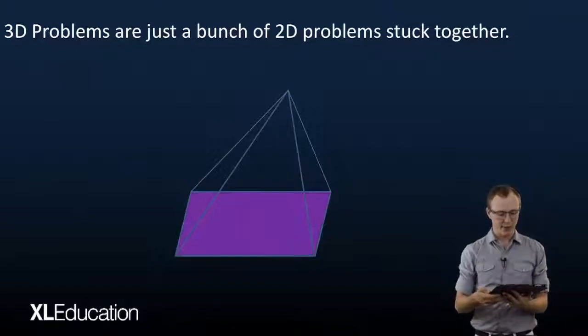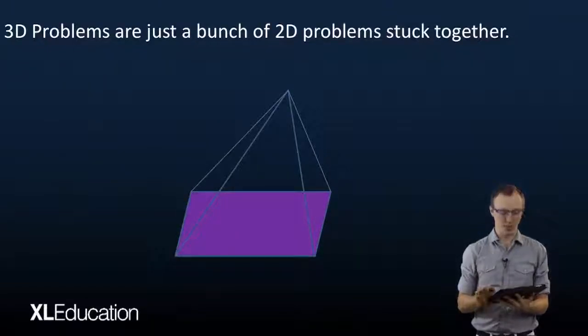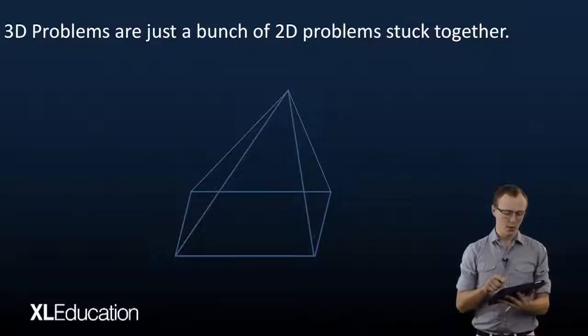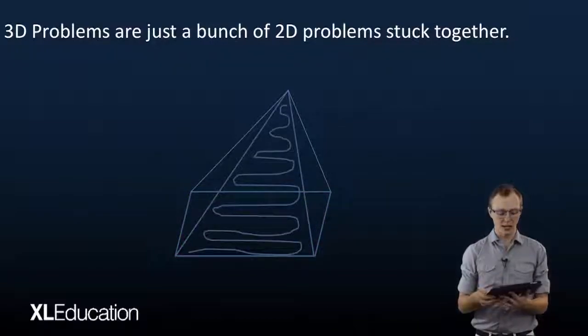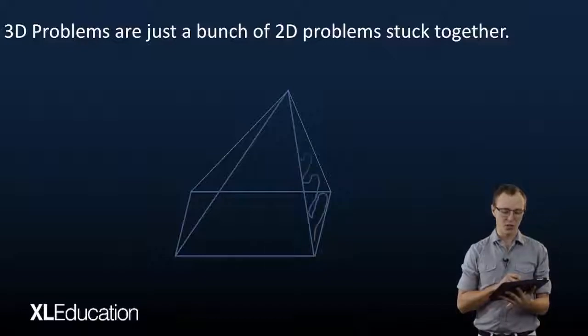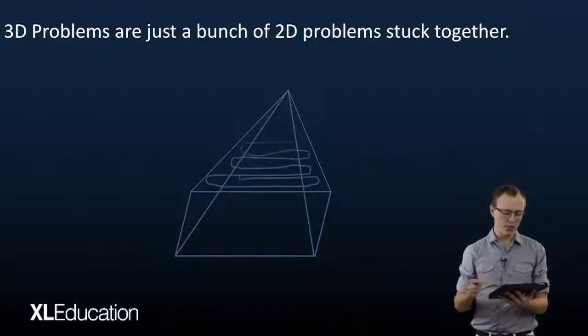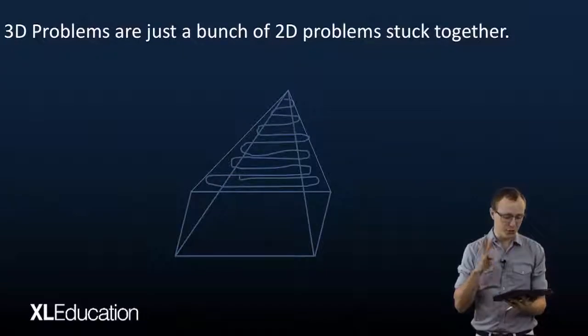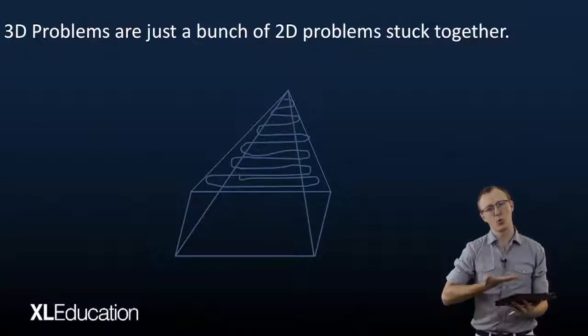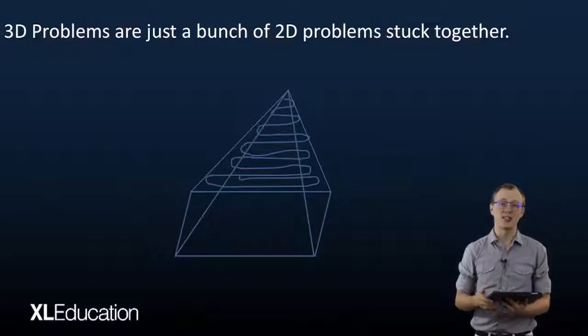You could have a base at the bottom there, there's our square. You have one side, the other side which is the second triangle. You have a third side which is your third triangle, and the fourth side which is your fourth triangle. So that shape you see there is just four triangles and a square at the bottom that's been stuck together.